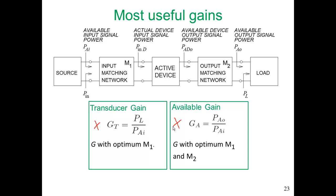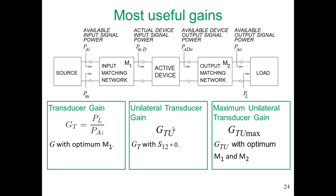The active device should be matched at the input using the input matching network and at the output using the output matching network. The unilateral transducer gain GTU is GT with S12 equal to zero. Ideally, the transistor would be a unilateral device and S12 would equal zero, so to some extent GTU is an ideal gain.